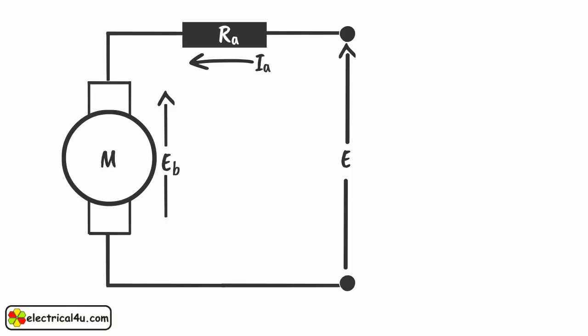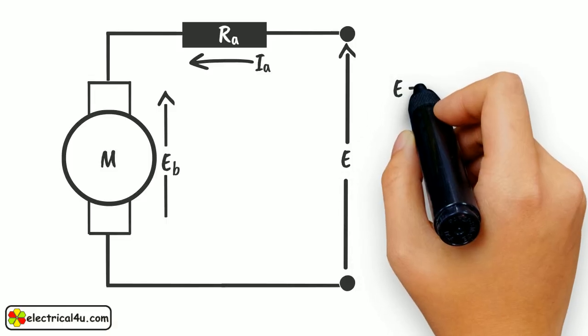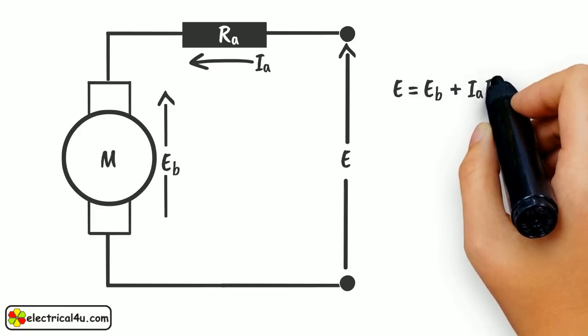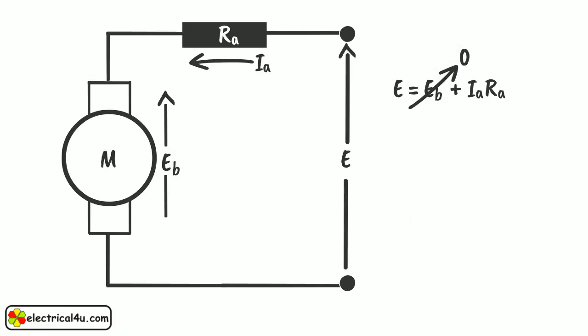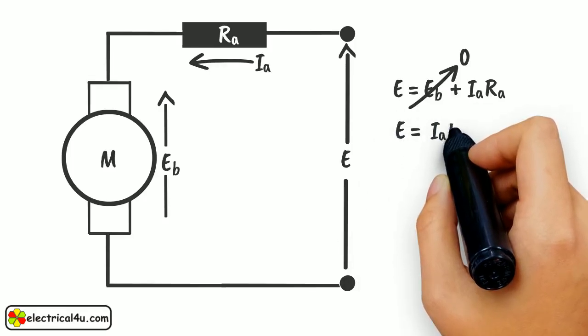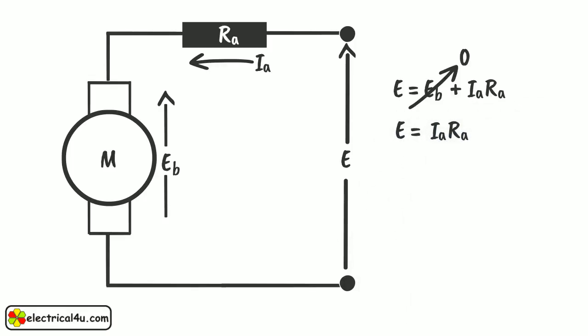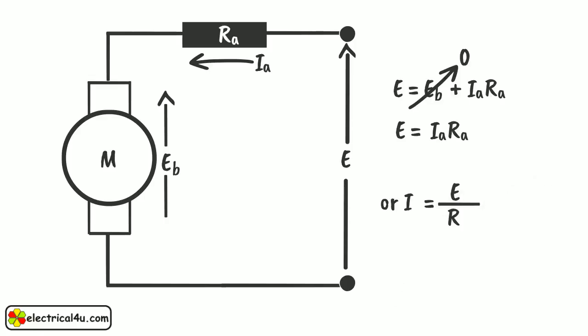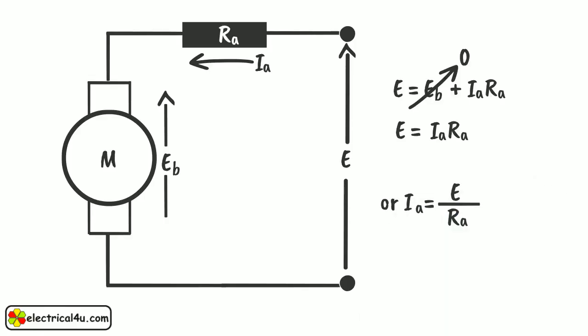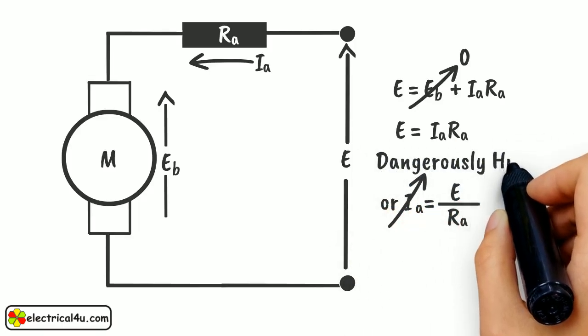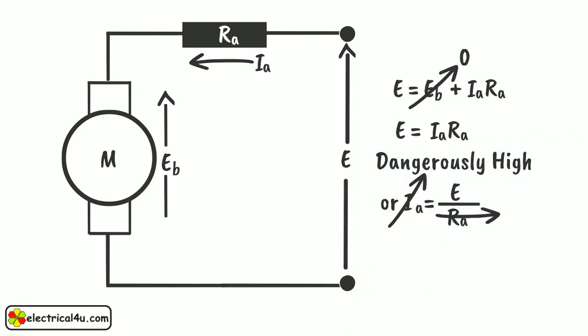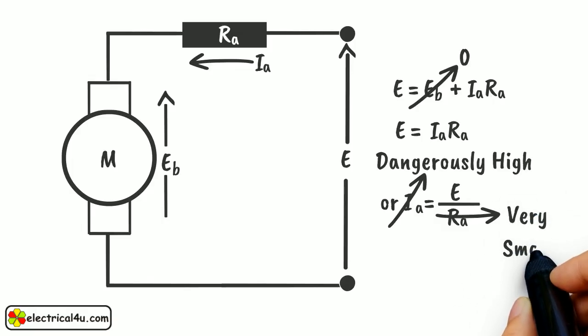The general motor EMF equation should be E equals EB plus IA times RA. As at starting back EMF is zero, EB equals zero, this equation can be written as E equals IA times RA. Therefore, IA equals E by RA. Thus, we can well understand from this equation that the current will be dangerously high at the starting because armature resistance RA is normally very small in all DC motors.